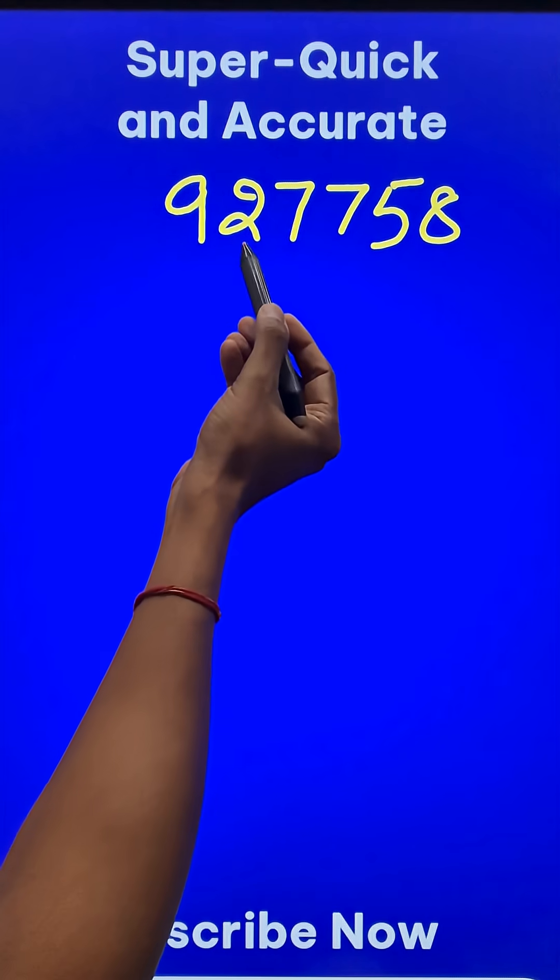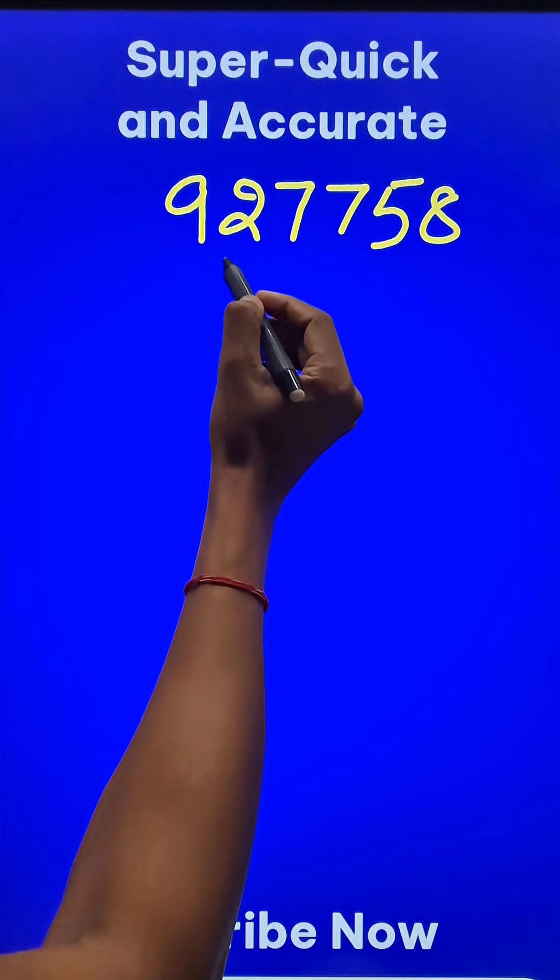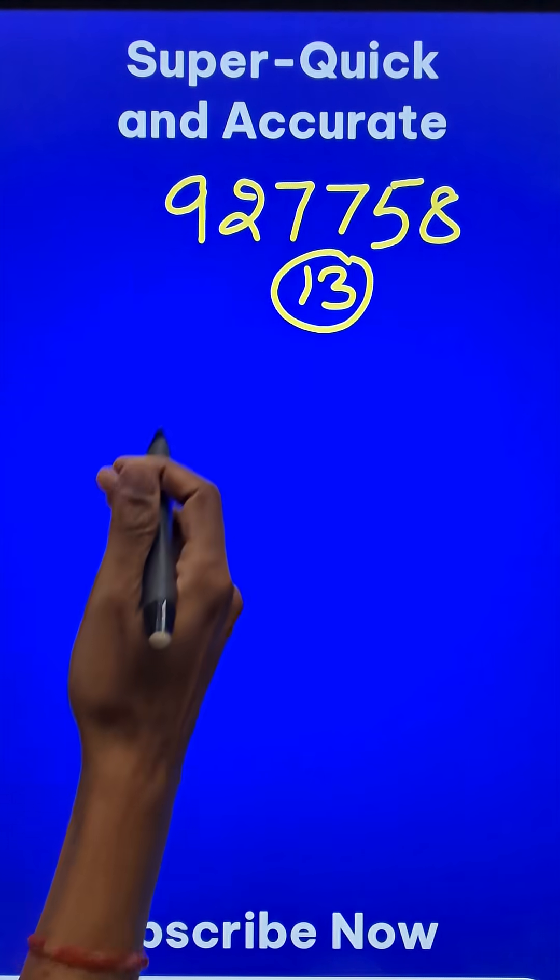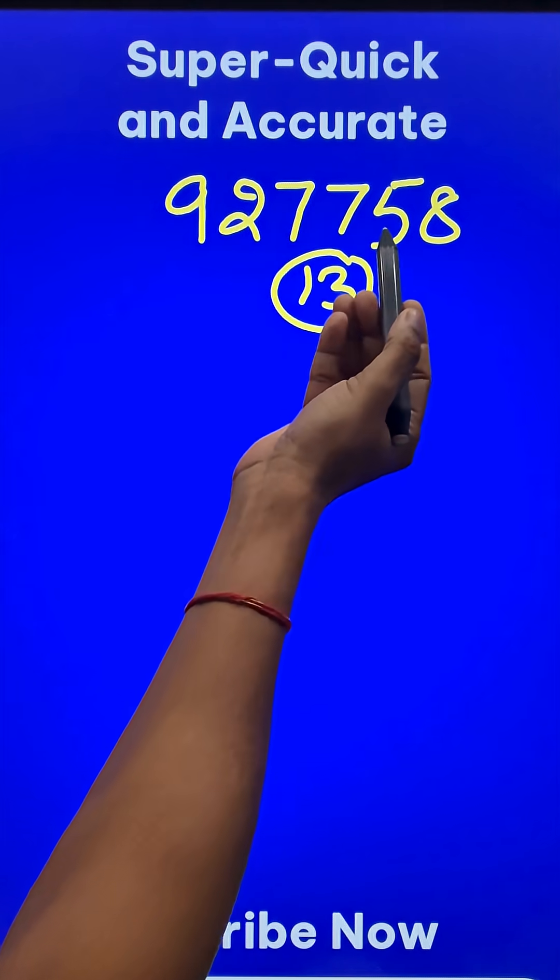How do you check whether this number 927758 is divisible by 13 or not? Divisibility rule of 13. That's difficult, right? So let's simplify it for you.